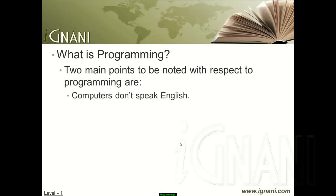The very important first point is that computers don't speak English. Since a computer is a machine, it only understands two basic concepts: on and off. This on-and-off concept is called the binary system, with on representing one and off representing zero. Hence, computers know only one language — that is zeros and ones, commonly known as binary language.